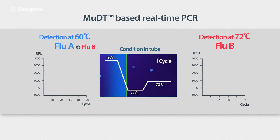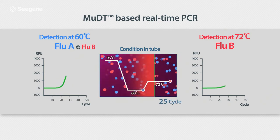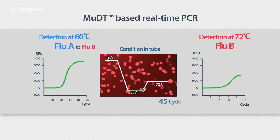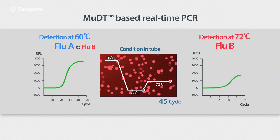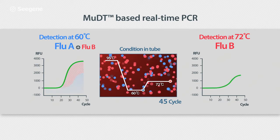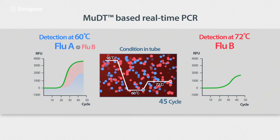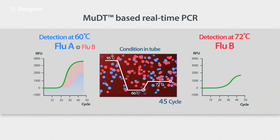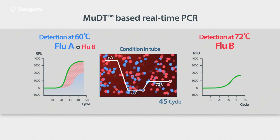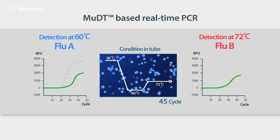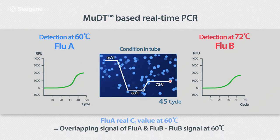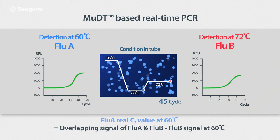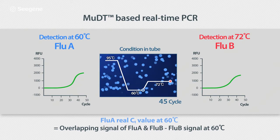Two detection temperatures were selected: 60 degrees Celsius and 72 degrees Celsius — the temperatures where fluorescent signals will be collected. When examining signal intensities, at 60 degrees Celsius, signals from both FLU-A and FLU-B overlap. However, at 72 degrees Celsius, only the signal for FLU-B can be read. MUDT then exactly subtracts the fluorescent signal for FLU-A from the overlapping signal collection at 60 degrees Celsius.